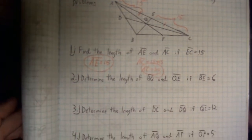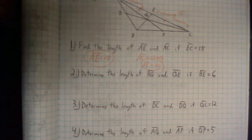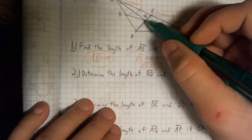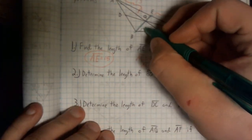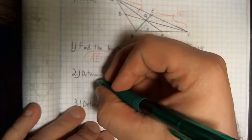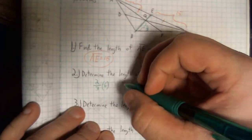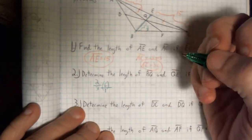Alright, our next problem asks to determine the length of BQ and QE if BE equals 6. BE is this entire length. Okay. BQ, we said, was two-thirds that length. So, we are looking for two-thirds of 6. Alright, well, I can assume that this is over 1, because any whole number can be put over 1.